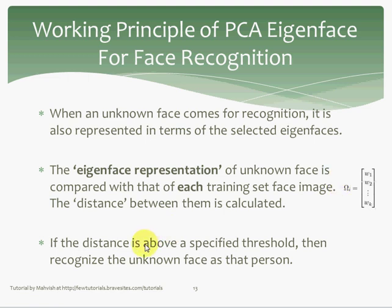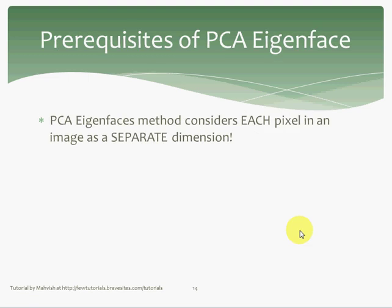Now for the prerequisites of PCA eigenfaces. We have a recap from part one — we saw some facts about PCA and how it works, and what their implication is when you're actually trying to implement the algorithm. The first prerequisite: PCA eigenvectors method considers each pixel in an image as a separate dimension.